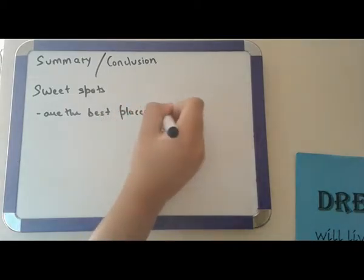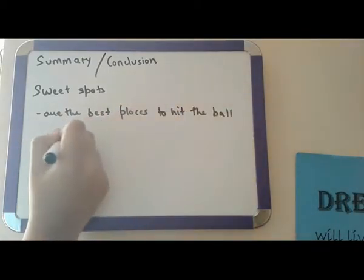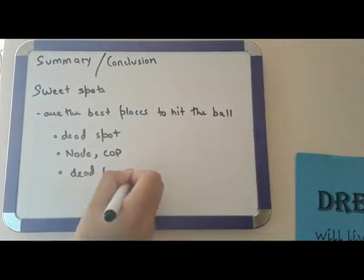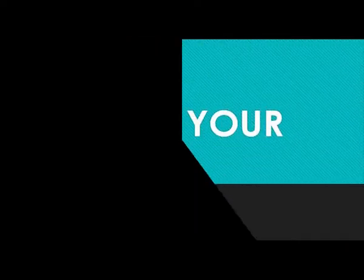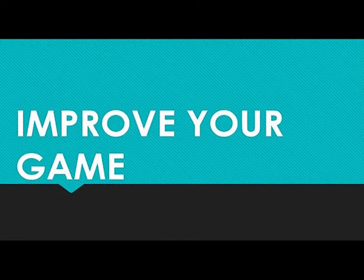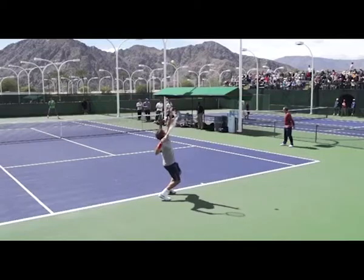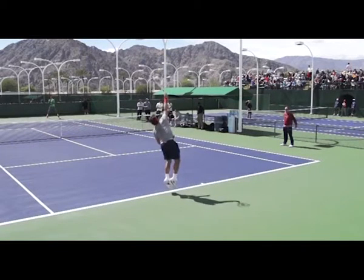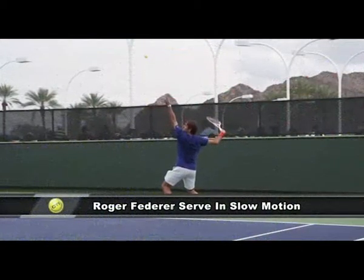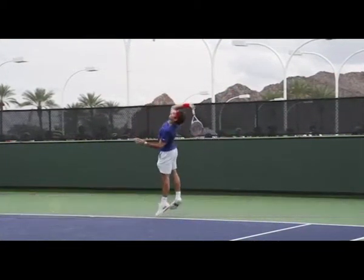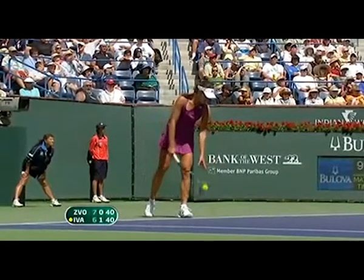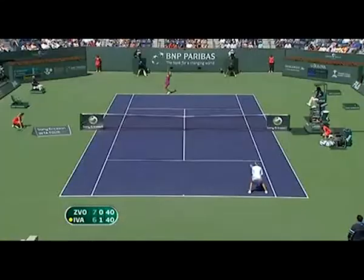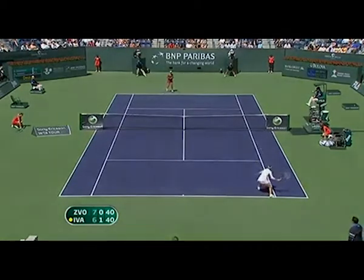There are four common sweet spots: the dead spot, the dead bands, and the two in the middle called the node and the COP. To improve your game, make sure the angle of the ball is small in order to get a high horizontal range. Also, make sure that when you hit the serve, the racket faces downward. It is also really important to account for wind, since it has a huge effect on how the ball moves, as any unbalanced forces caused by the wind will make the ball accelerate in the wrong direction.